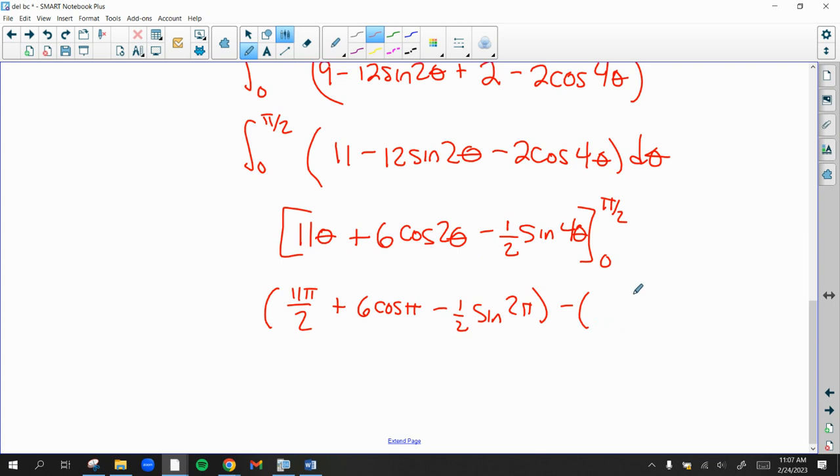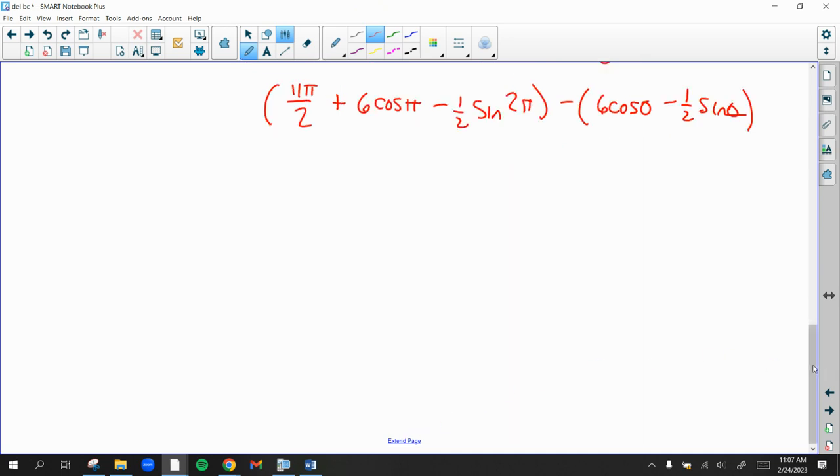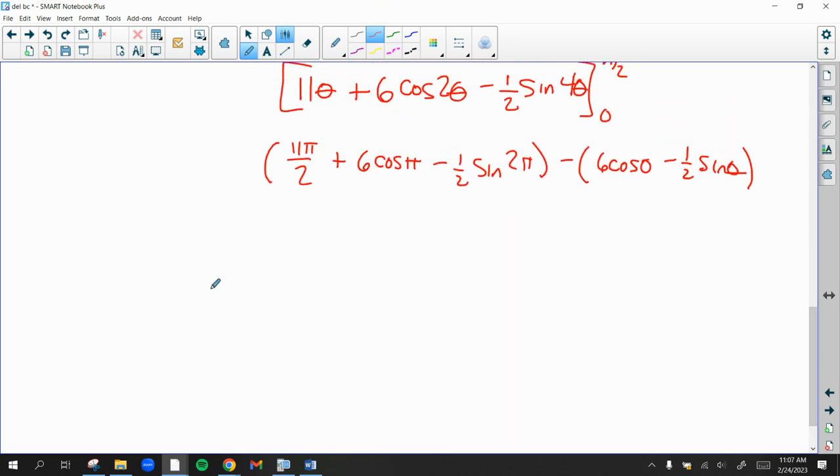Now we're going to plug in 0. So we have 11 times 0 is 0. So 6 cosine of 0 minus 1 half sine of 0. So that works out very nicely. So we have 11 pi over 2. Cosine of pi is negative 1. So minus 6. Sine of 2 pi is 0. So that's gone. So we're right here. Minus.